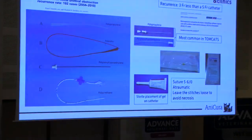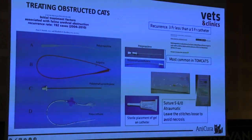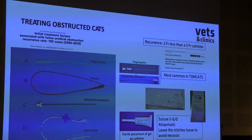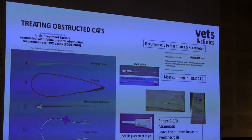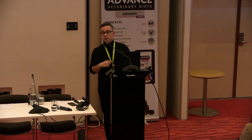Which catheter should we use? I prefer the Mila soft smooth catheter. It is more expensive but is the best option to minimize trauma to the bladder. The most commonly known catheter is the tomcat catheter, but this one can increase irritation of the urothelium and increase the number of recurrences. Studies have shown that using a smaller diameter catheter is better for the cat and reduces recurrence.